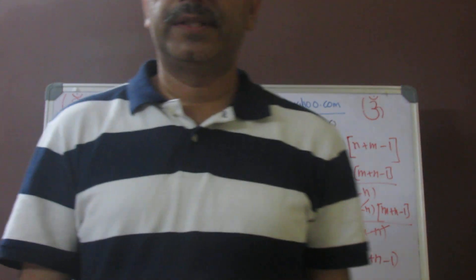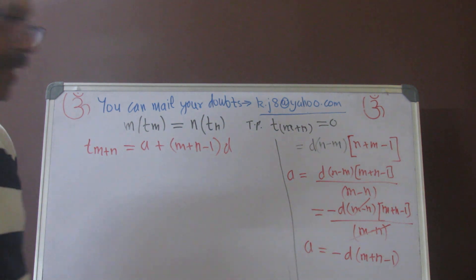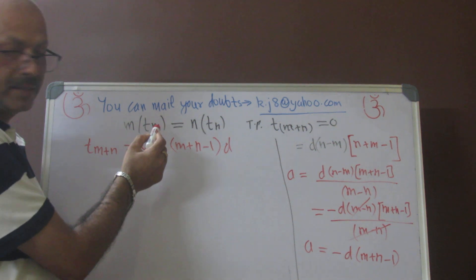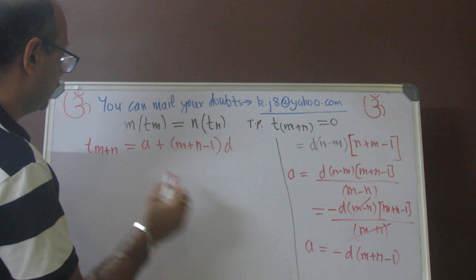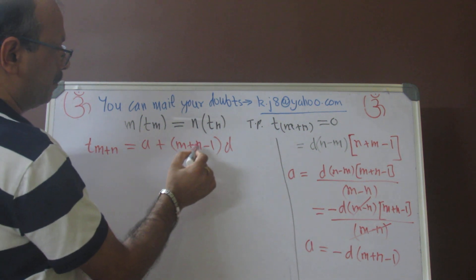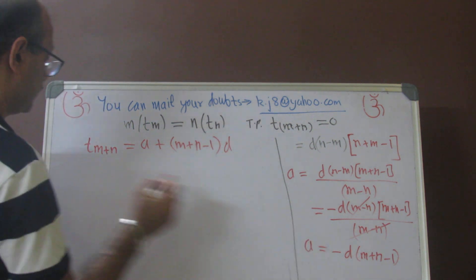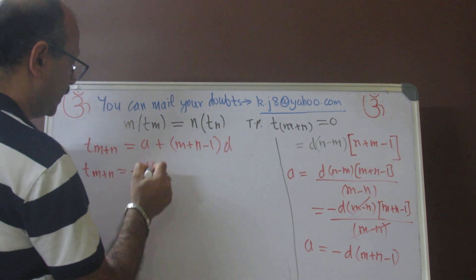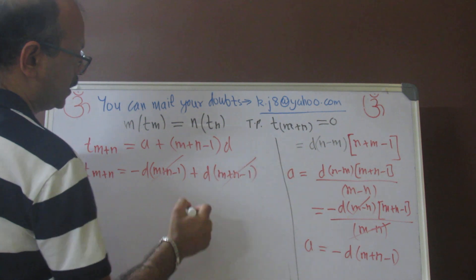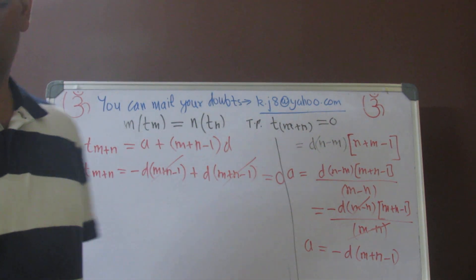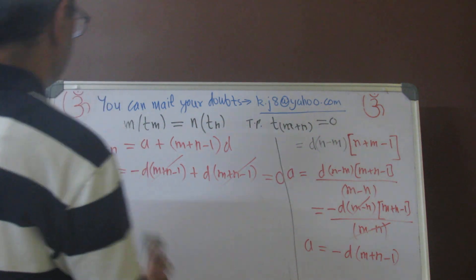Welcome back to Himani Coaching Center. In our third series of AP, we were doing a question on: if m times the mth term of an AP is equal to n times the nth term, then prove that its (m+n)th term is 0. We had found that a equals minus d(m+n−1). Replacing a with this, we get minus d(m+n−1) plus d(m+n−1), and these cancel each other, giving 0. If you are watching this video directly, please go back and watch AP series 3 first.